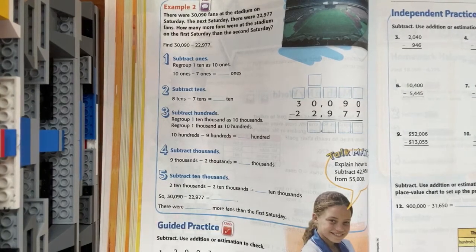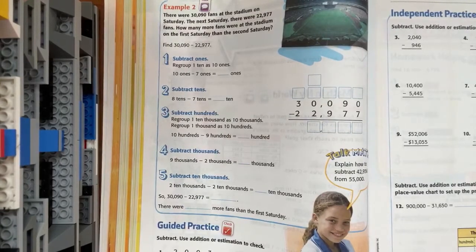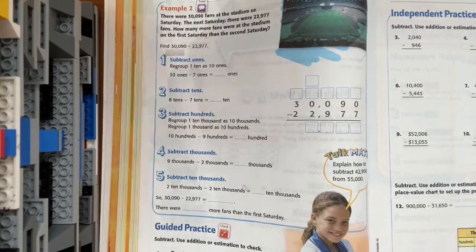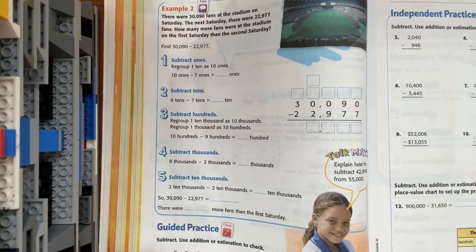So today we're going to work on Lesson 7 in Chapter 2. We're going to be subtracting across the zeros. So, let's start with Example 2.